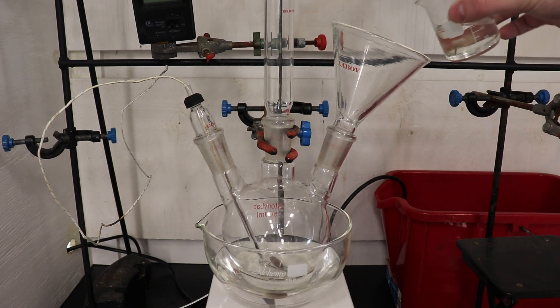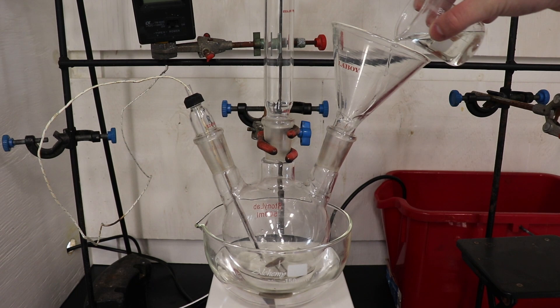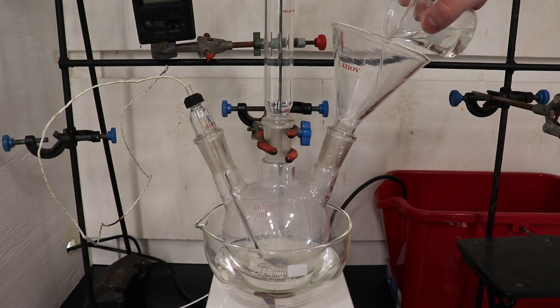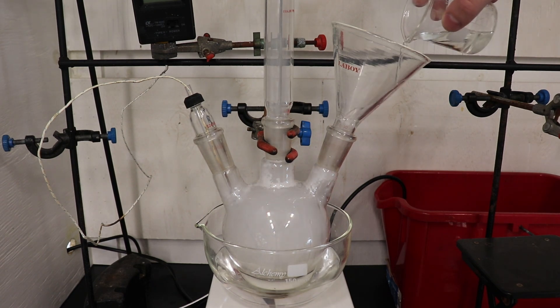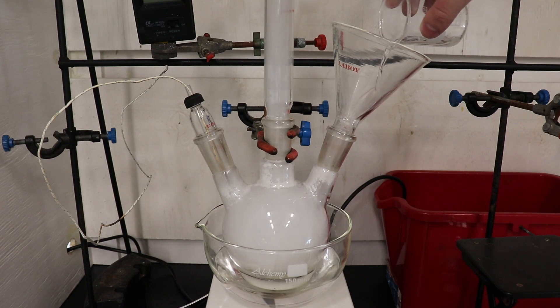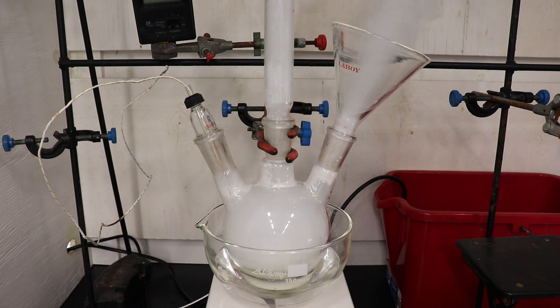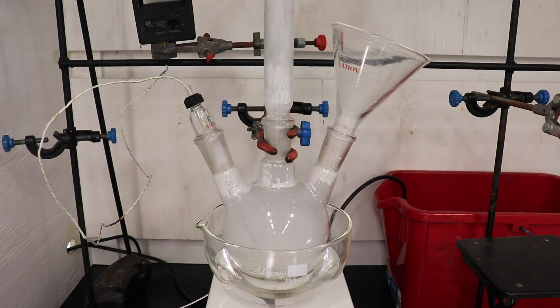Hydrochloric acid was then added until the mixture was strongly acidic, which took about 50-60ml of 31% HCl. The addition of the acid was very strongly exothermic, generating white clouds of acidic vapor and changing the color of the mixture to a pale yellow.